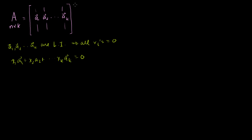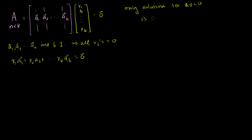Another way to write it: all solutions to the vector [x1, x2, ... , xk] equaling the 0 vector means all entries have to be 0. This is just another way of writing the same thing — that the only solution to Ax = 0 is x equal to the 0 vector. So the null space of A must equal just the 0 vector.